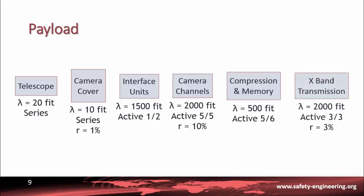Finally, 3 X-band transmissions with a failure rate of 2,000 FIT, an active redundancy of 3 over 3 and an operational rate of 3%. When it is not mentioned, we assume an operational rate of 100%.